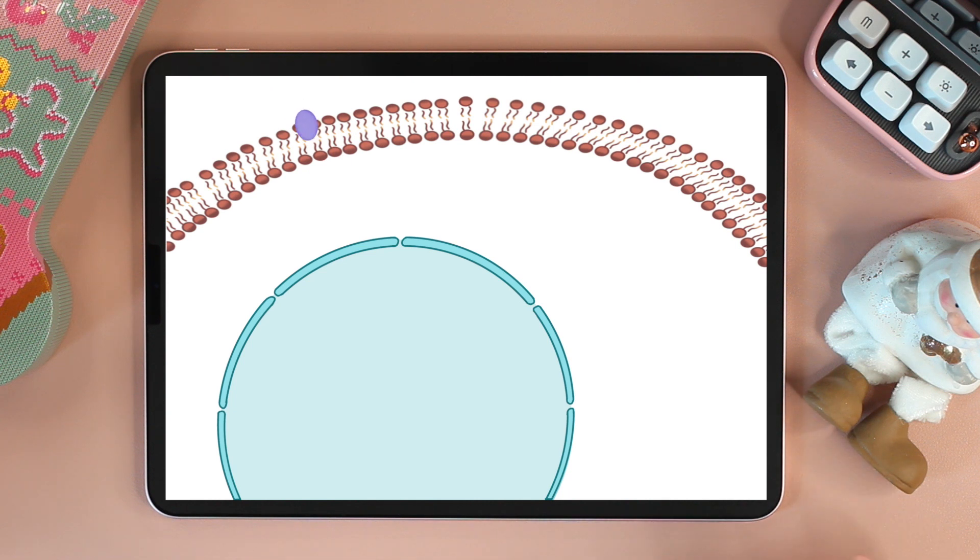As we can see here in this animation, a steroid hormone passes through the membrane and binds to its specific receptor, which happens in this example to be in the cytoplasm.